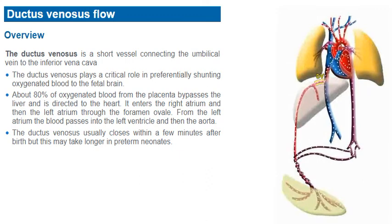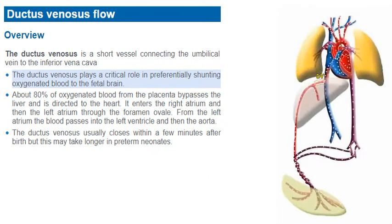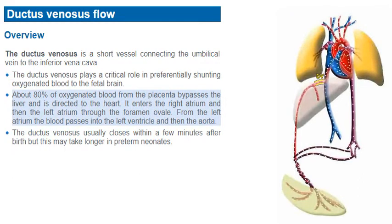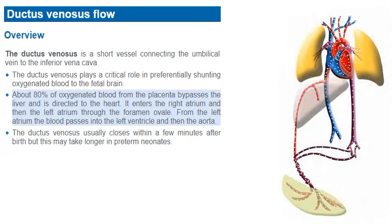The ductus venosus is a short vessel connecting the umbilical vein to the inferior vena cava. The ductus plays a critical role in preferentially shunting oxygenated blood to the fetal brain. About 80% of oxygenated blood from the placenta bypasses the liver and is directed through the ductus venosus to the heart. It enters the right atrium and then the left atrium through the foramen ovale. From the left atrium, the blood passes into the left ventricle and then the aorta.